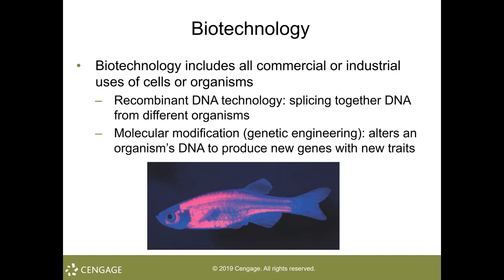Beginning in the mid-1970s, the development of recombinant DNA technology led to radically new research approaches in which researchers spliced together DNA from different organisms in the laboratory. One goal of this technology is to enable scientists to obtain many copies of a specific DNA segment for study.